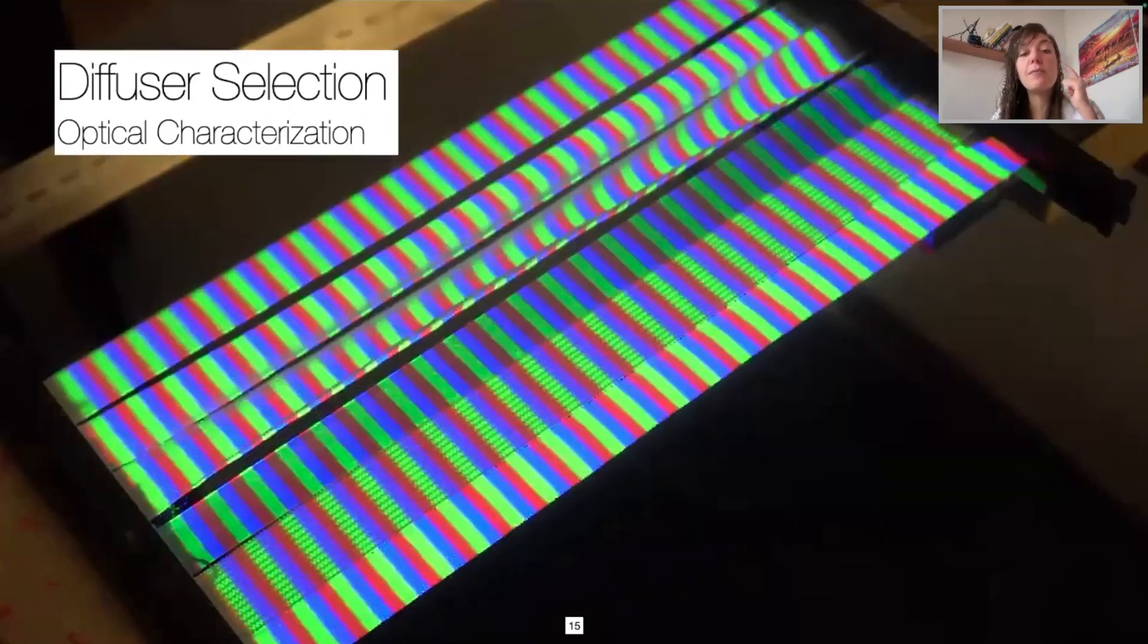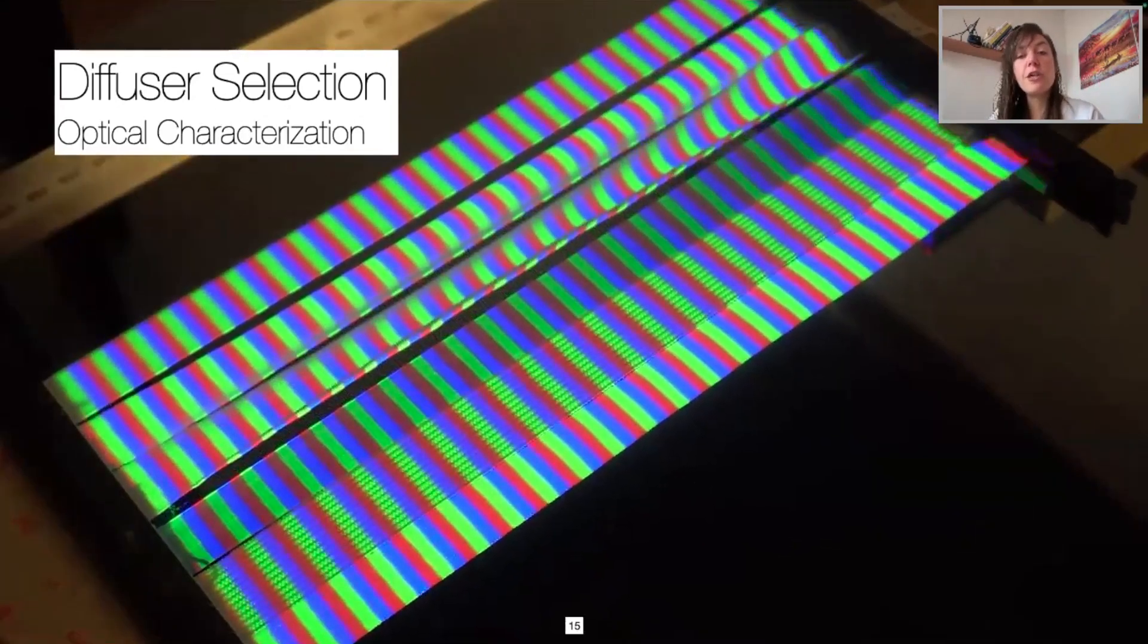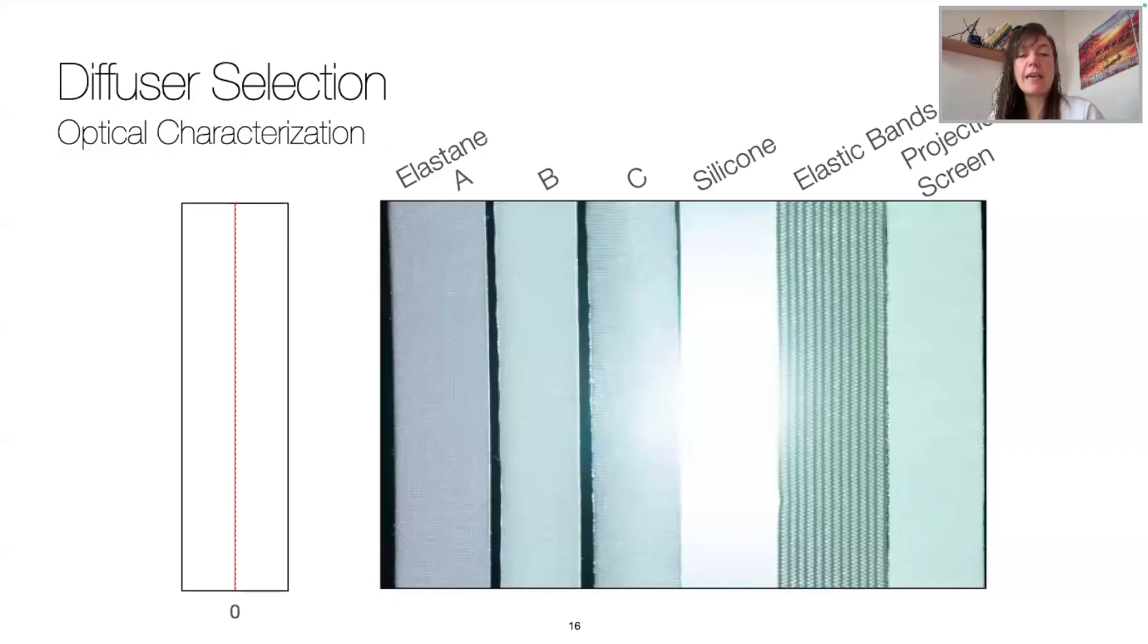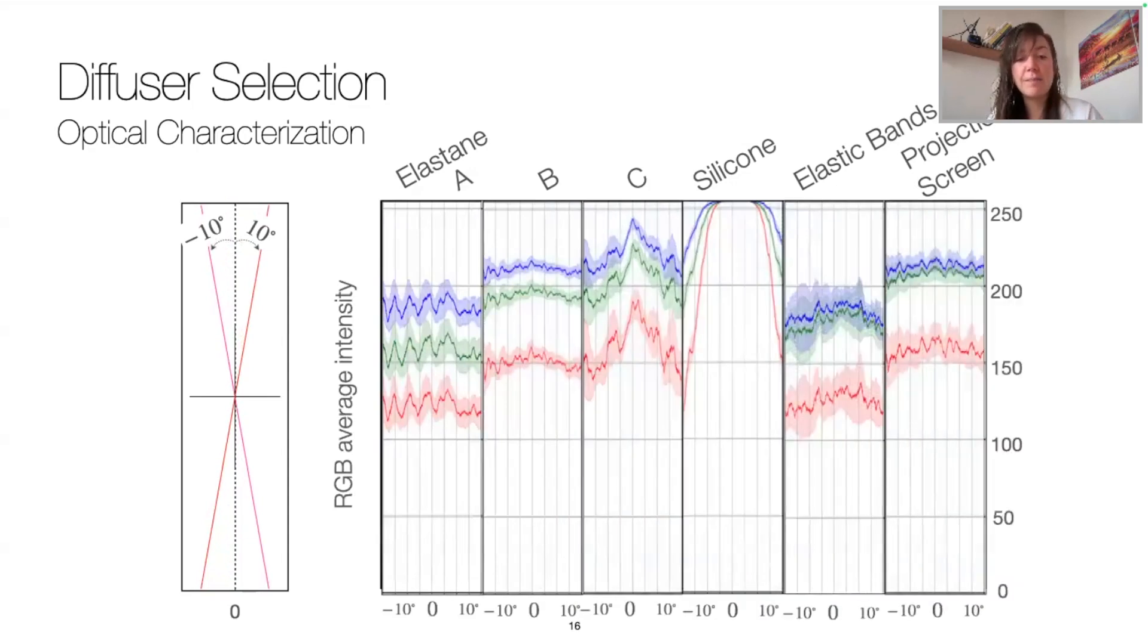Then we also characterize the optical properties of our samples with a grid pattern, RGB stripes, and a white light while being stretched and relaxed. So let's look at the white light. So we see here that the silicone reflects it and that the elastic bands show dark lines around the seams. So we decided to measure the RGB average intensities over this spread as a function of the offset angle from the central projection axis. So we know that, for instance, for the silicone, the average intensity is saturated at the center due to the reflection of the light. But for the rest of the samples, results are quite constant, and more especially, the elastic bands' dark lines do not seem to impact the RGB intensities, with results similar to the traditional projection screen.